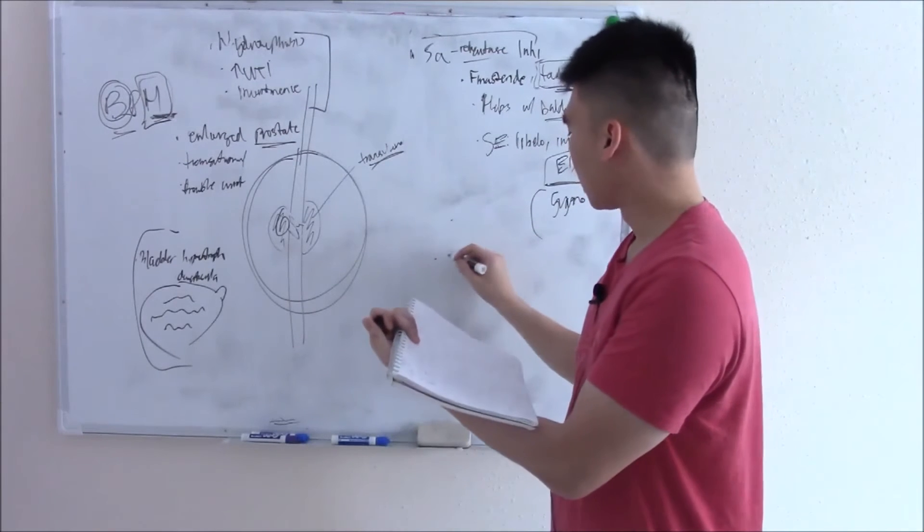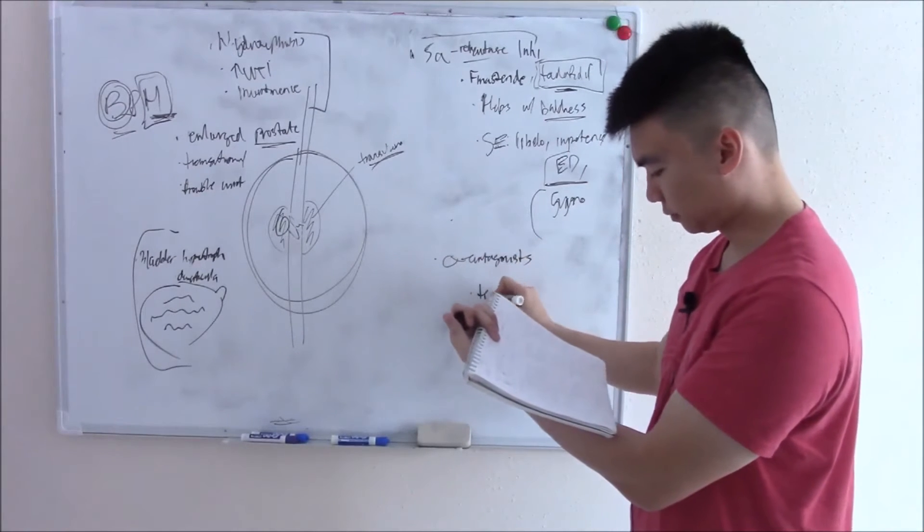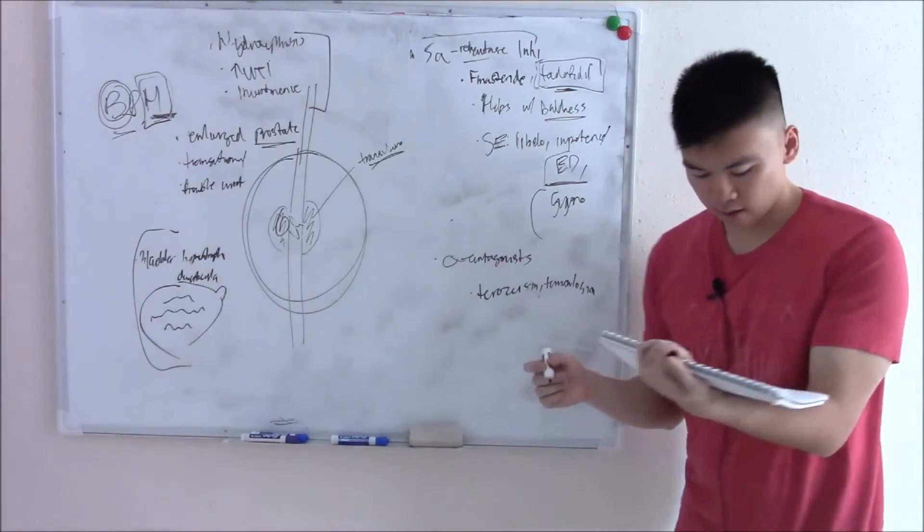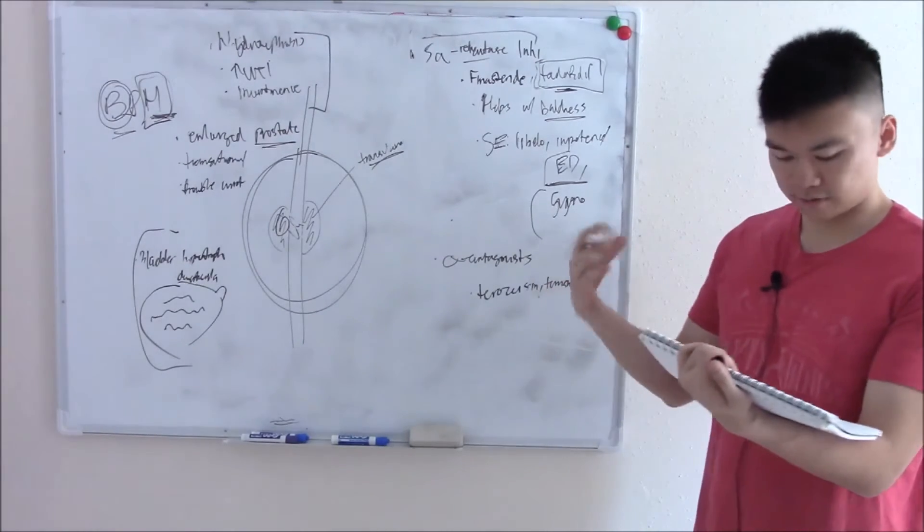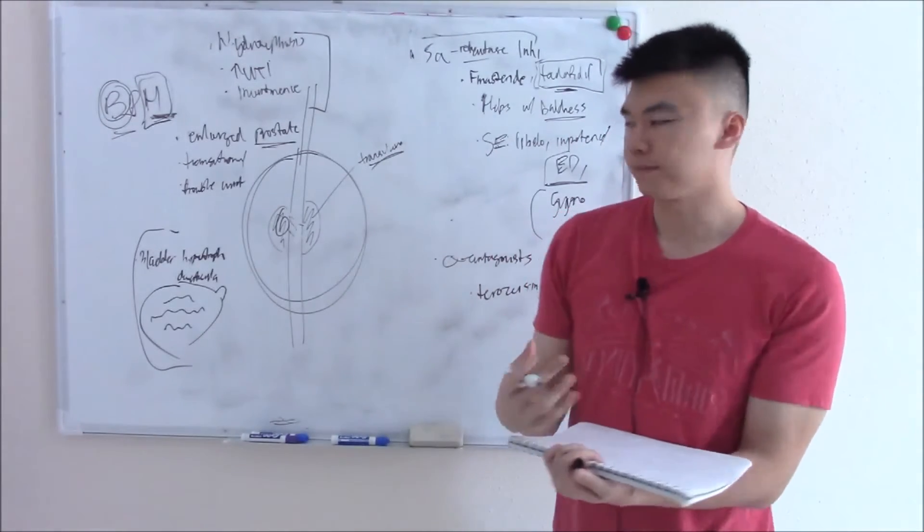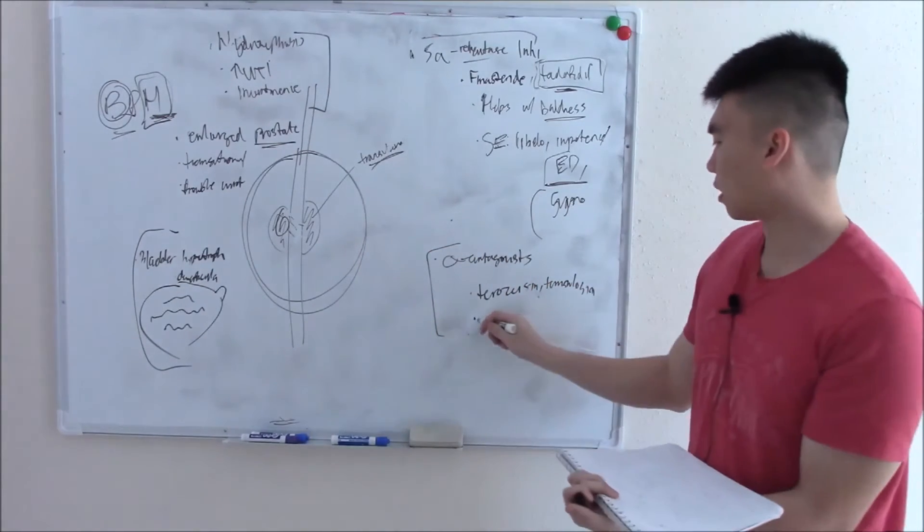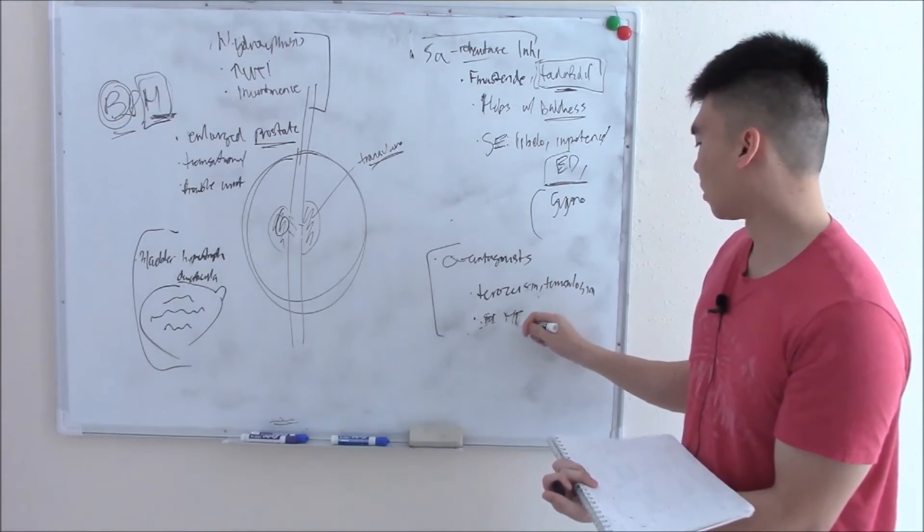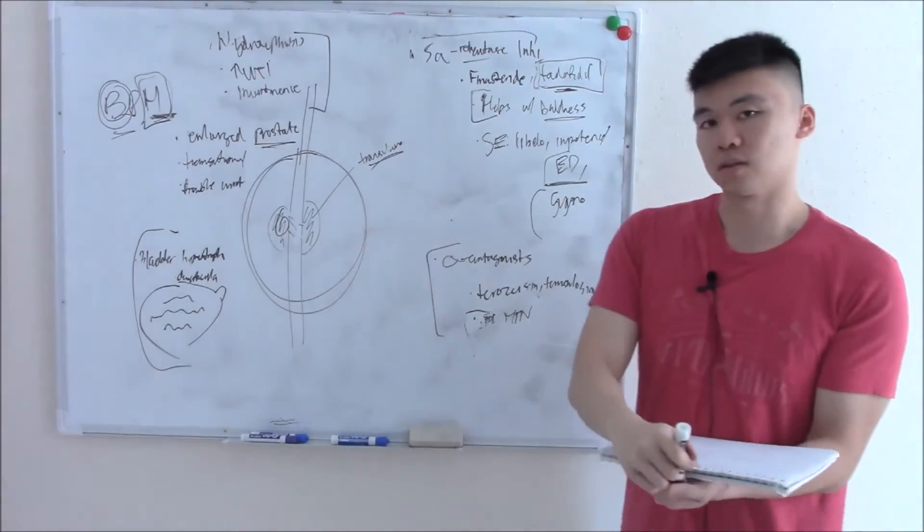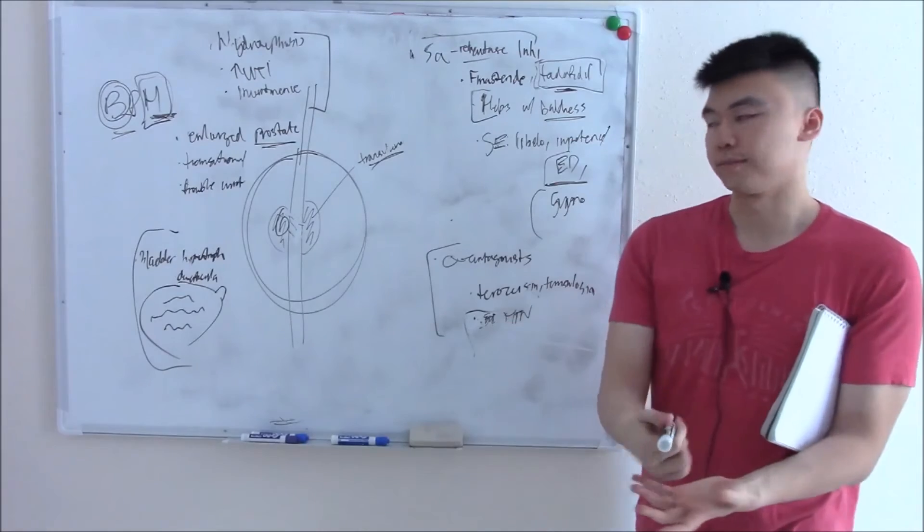Another drug for BPH if you don't want to touch the hormonal pathway: alpha antagonists including terazosin and tamsulosin. These relax smooth muscles—your bladder, sphincter, and blood vessels. By relaxing the bladder and sphincter, it causes less strain and fewer urinary problems. Because it causes vasodilation, it can help with hypertension. If all else fails, you can do surgery. That's BPH.